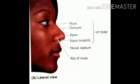This is a diagram of the external nose shown in lateral view. It shows the root, dorsum, apex or tip of the nose, and the anterior naris. Internally, there is the nasal septum and also the columella in between the nostrils.